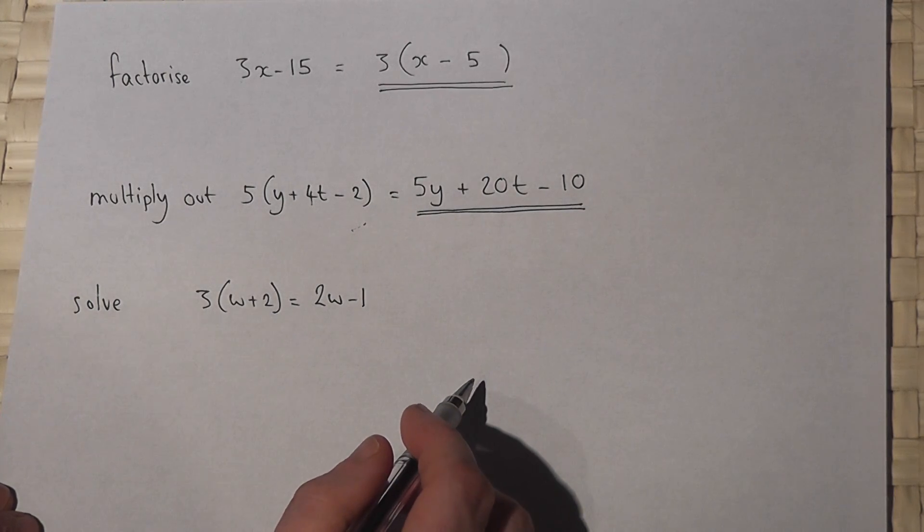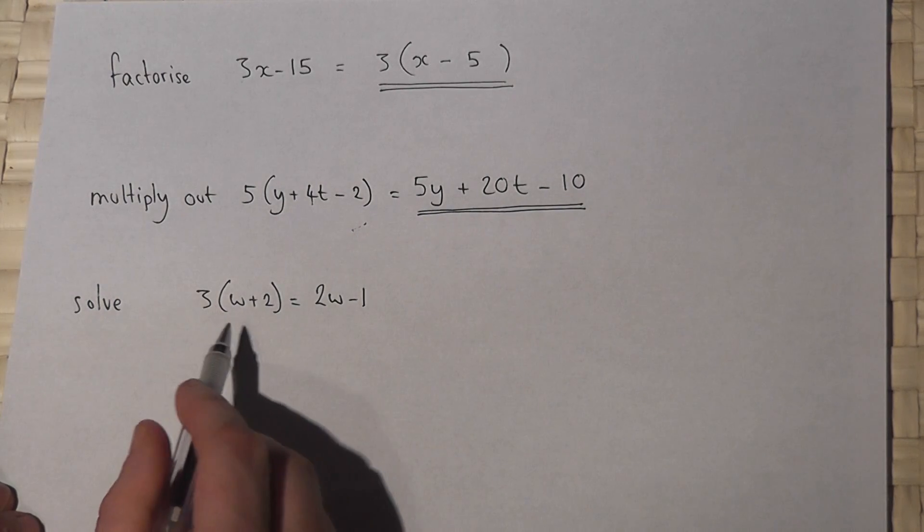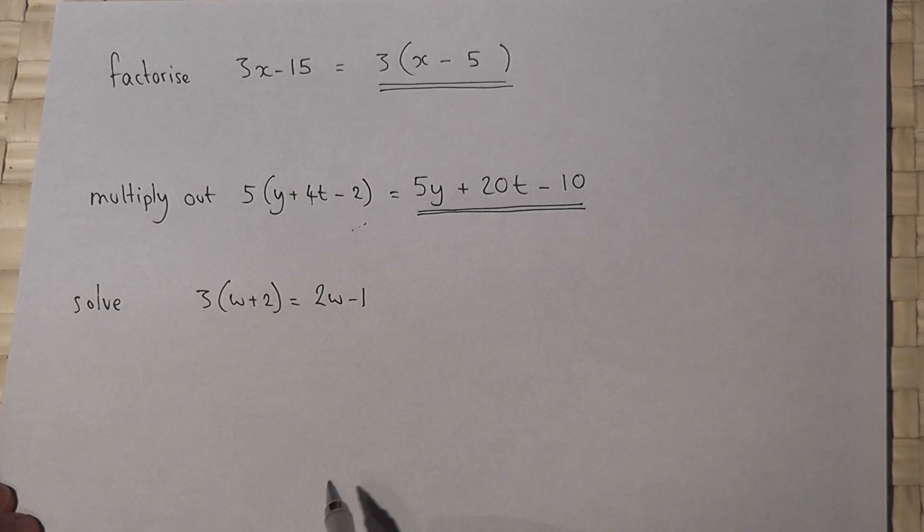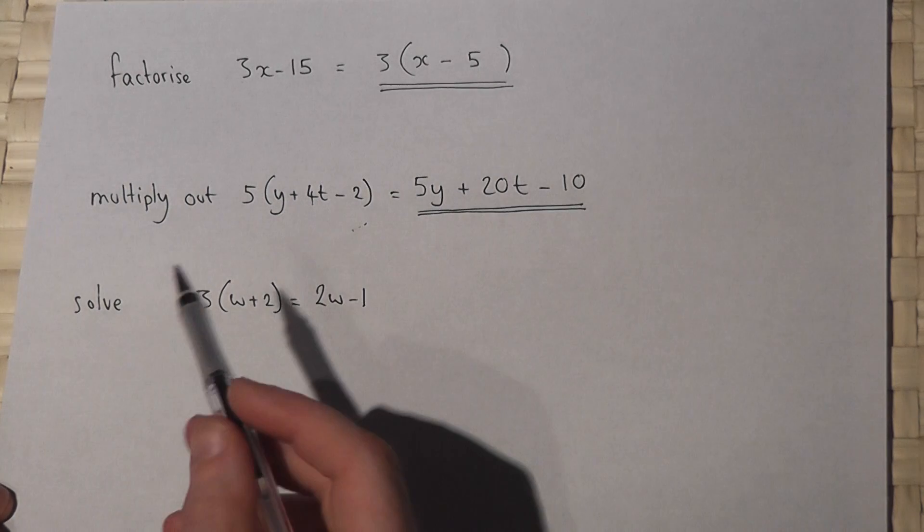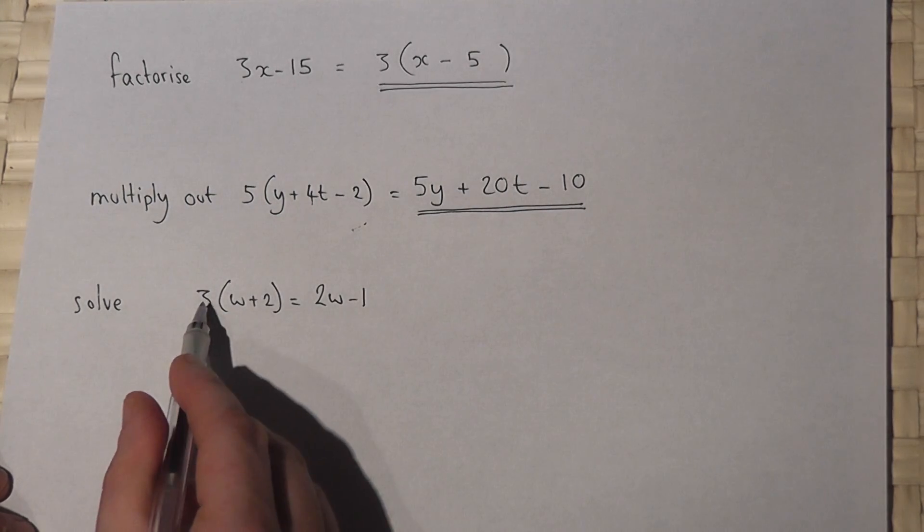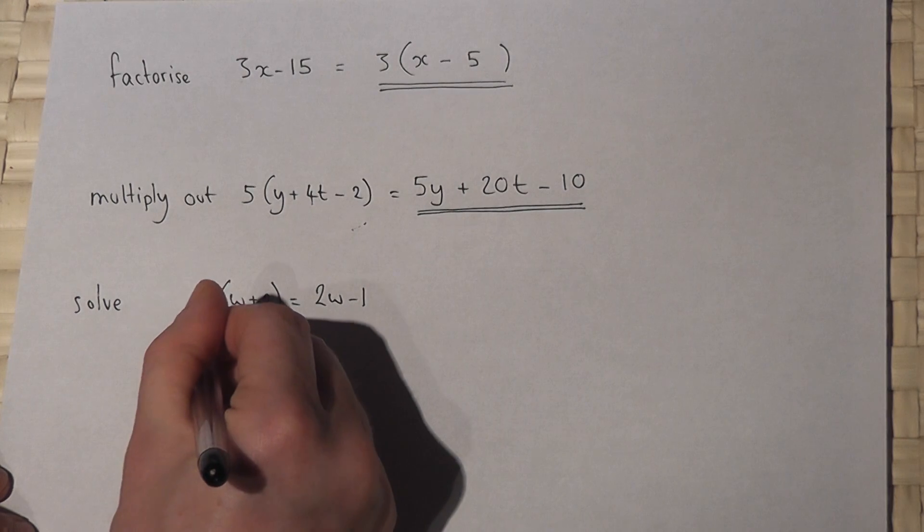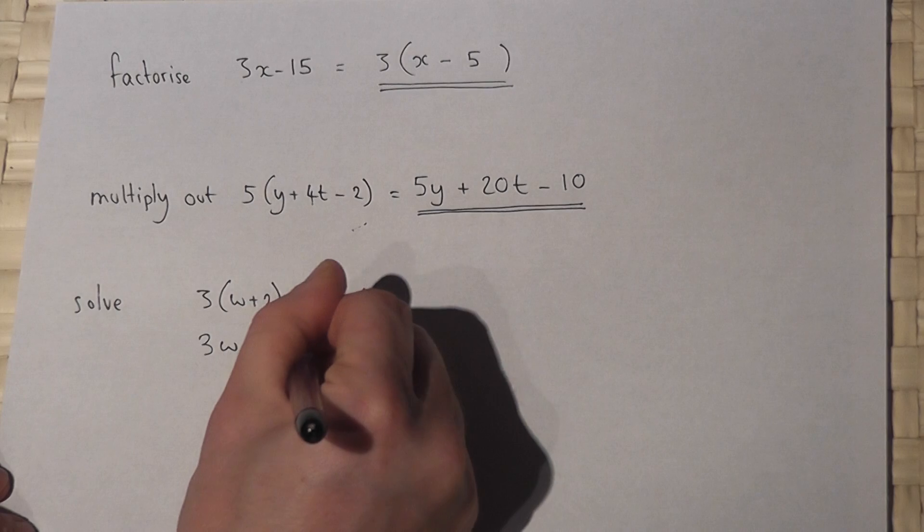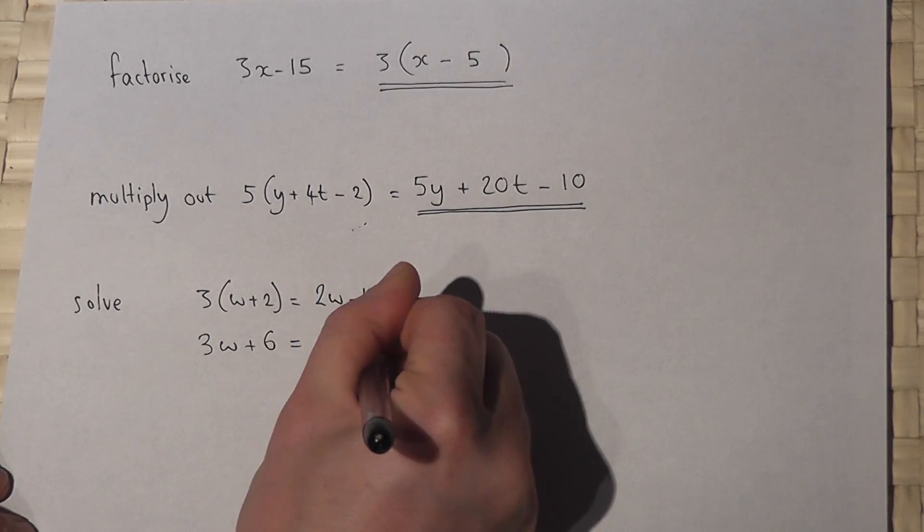Finally we're asked to solve an equation with a bracket and terms on both sides. My advice with these equations is always to expand first. So 3 lots of w plus 2: 3w plus 3 times 2 is 6, and this must equal 2w minus 1.